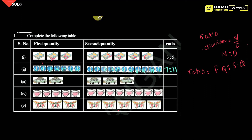Then, counting: 1, 2 cars in the first quantity, then 1, 2, 3 cars in the second quantity. So the ratio is 2 is to 3 for this one.